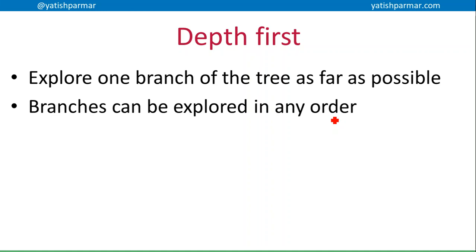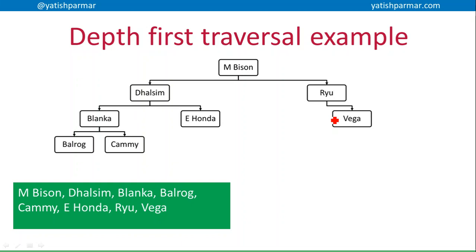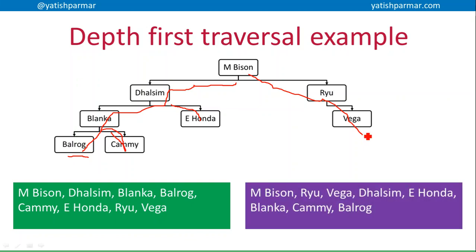With a depth-first traversal, it's slightly different. Basically, we're going to go down one branch of the tree as far as possible. We can explore those branches in any kind of order. An example of a depth-first traversal might be M-Bison, Dalsim, Blanca, Balrog — going down one whole branch to see it in as much detail as possible. We know we've reached the end of a branch because the pointers at the bottom level are null; they don't point to any more nodes — we've hit a leaf. Sometimes you will see people talk about using stacks for depth-first traversal, and using a different order will give a different output.